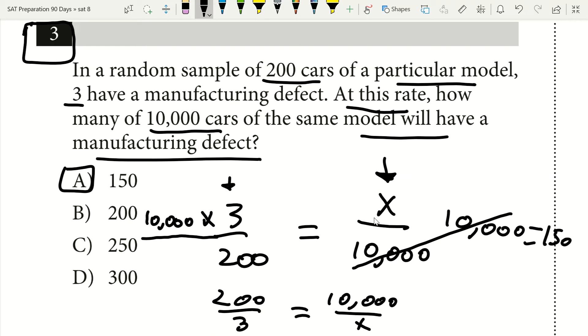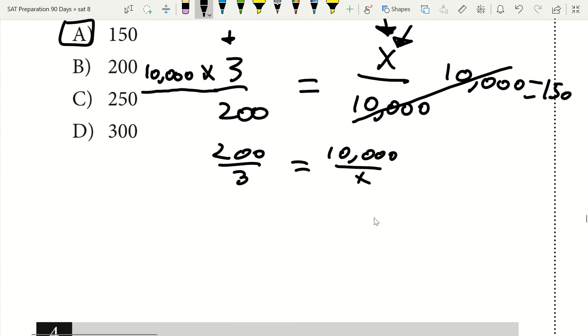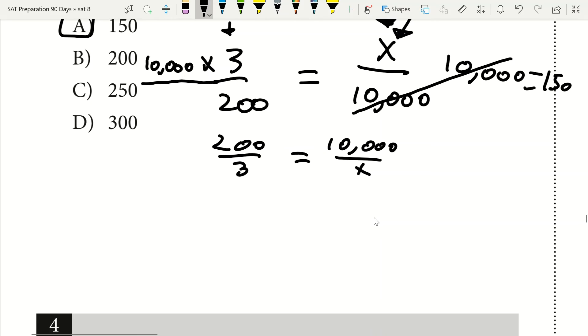So why does setting it up like this with the variable that I want to solve for on top save me time? Well, I'll show you. If I was to set it up with the variable I want to solve for on the bottom in my denominator,